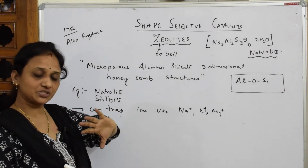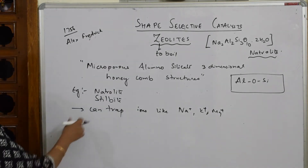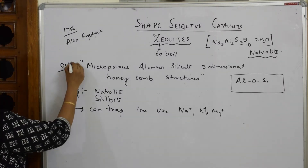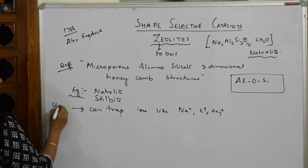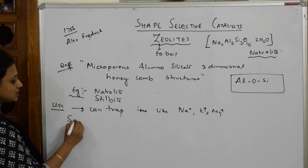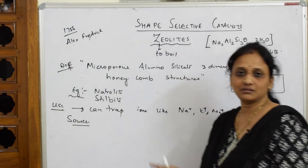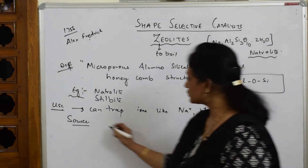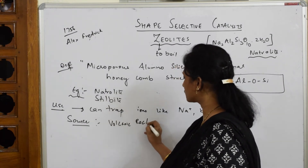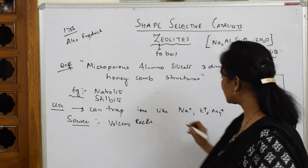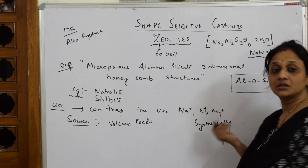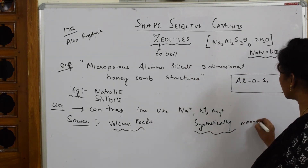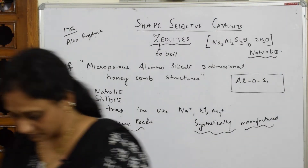For a three-mark answer, write the definition, examples, uses, and the source from which zeolites are obtained. Zeolites can be obtained from two sources: biological/natural sources such as volcanic rocks, and they can also be prepared synthetically in the lab.